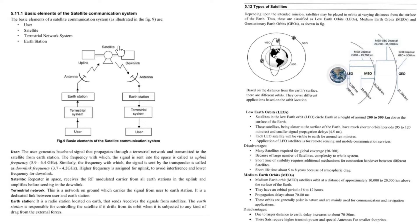Now let us see satellites. These satellites can be called repeaters in space. They receive the RF modulated carriers from the earth station through a dedicated line from user to earth station.